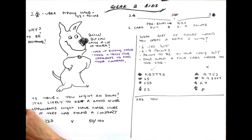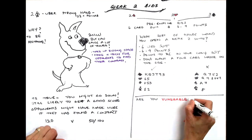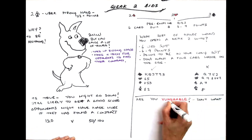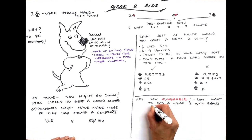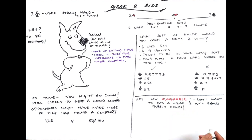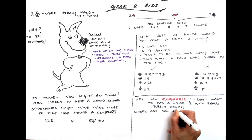There are a couple of other things to think about too. If you're vulnerable, you don't want to bid a weak two with a really rubbish hand. The other thing to think about is where you are in the bidding.